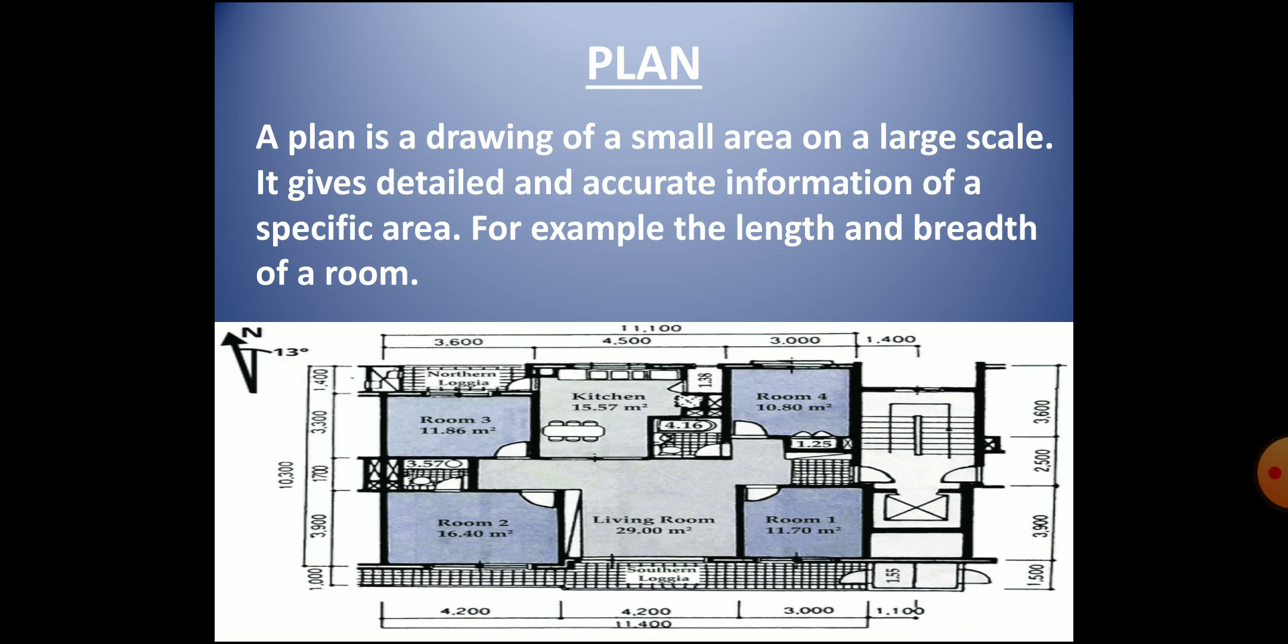There is another term used sometimes, that is a plan. It is a detailed and accurate drawing of a very small area on a large scale. Plans are always drawn to scale. They give a lot of information about a specific area. You may argue, children, that even a large scale map also gives a lot of information. So how is a plan different from a large scale map? Even a large scale map cannot show certain things such as the length and breadth of a room. Such details with accuracy can be drawn or shown by a plan only. Plans give minute details of the interiors of buildings which cannot be shown in a map.